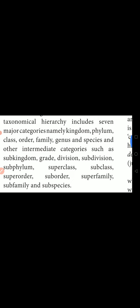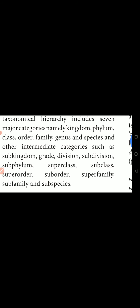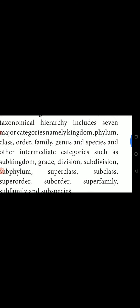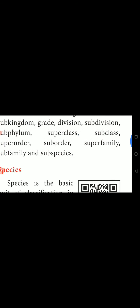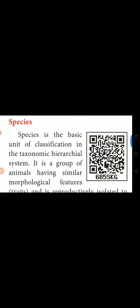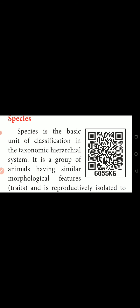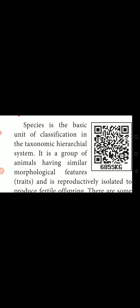The lowest taxa is Species, and the highest taxa is Kingdom. Species is the basic unit of classification in the taxonomical hierarchical system. Underline this — they will ask you: 'Dash is the basic unit of classification.' That one word is important, just underline it.